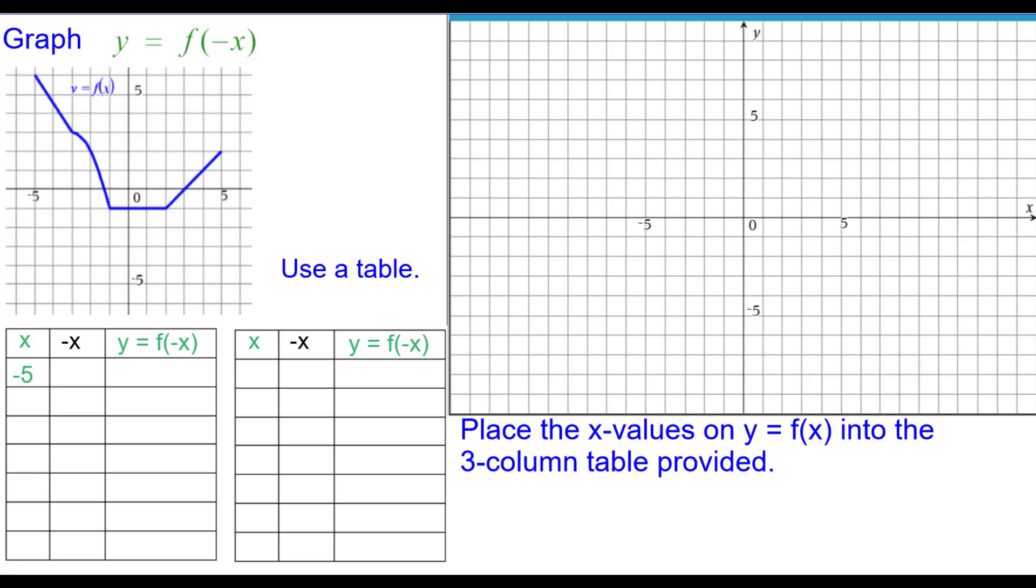Starting with negative 5 because that's the lowest value on the blue function, all the way to positive 5, the maximum value, and all the integers in between.